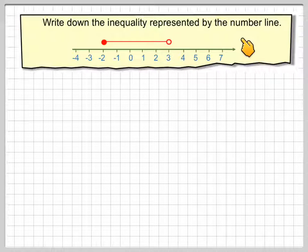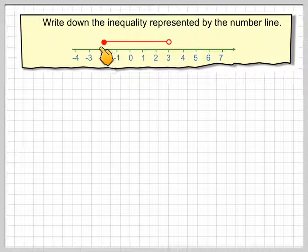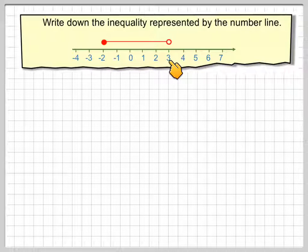Write down the inequality represented by the number line. So here we've got a number line and we've got two dots, one at 2 and one at 3. This one is filled in and this one is not filled in.